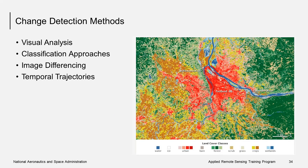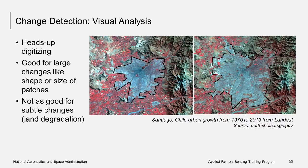There are several different change detection methods using satellite imagery. I will discuss four of them: visual analysis, classification approaches, image differencing, and temporal trajectories. One of the most basic methods is called heads-up digitizing, where you display imagery using GIS or image processing software and digitize a polygon around the areas of change. The size of these polygons can then be measured to quantify the amount of change. This approach is good for measuring large changes like the shape or size of patches — for example, digitizing urban growth. However, this is not a good approach for detecting subtle changes like land degradation.